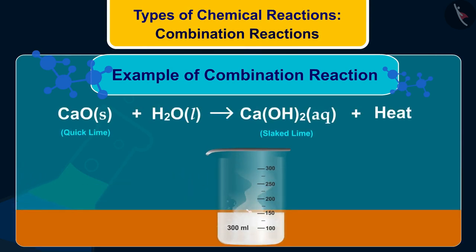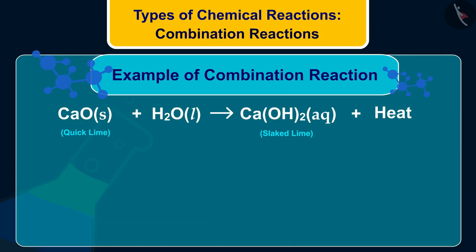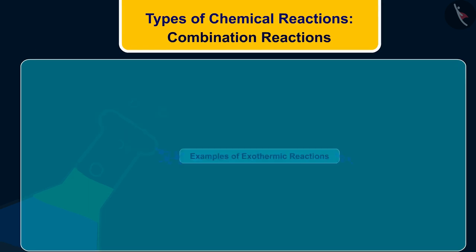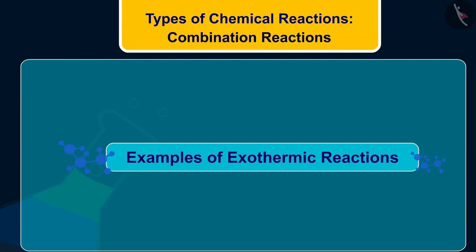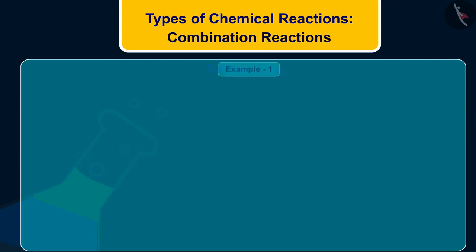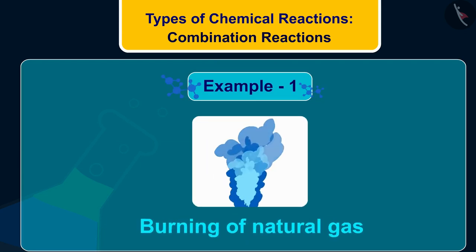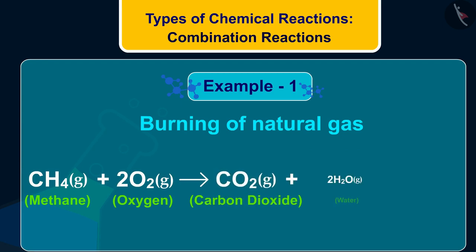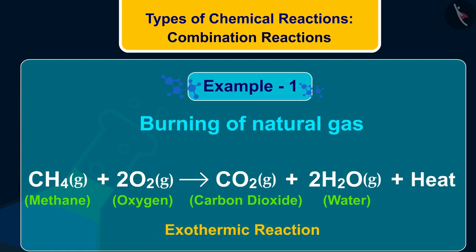Quicklime is calcium oxide, CaO. Such reactions in which heat energy is evolved are called exothermic reactions. Let us now discuss a few examples of exothermic reactions. The first example is burning of natural gas — methane, CH₄. When burnt in air, it reacts with oxygen to form carbon dioxide and water along with a large amount of heat, so it is an exothermic reaction.